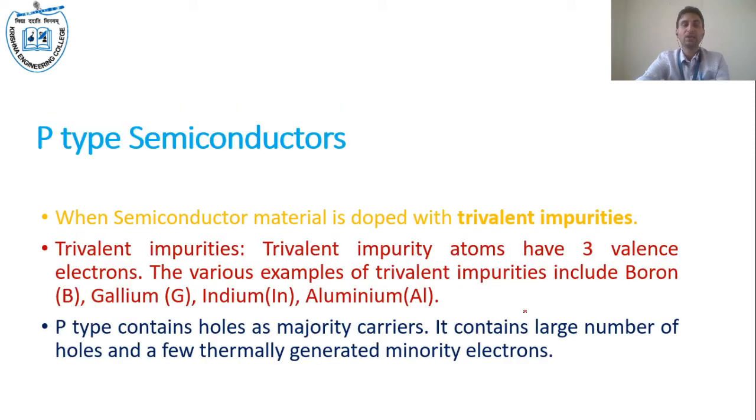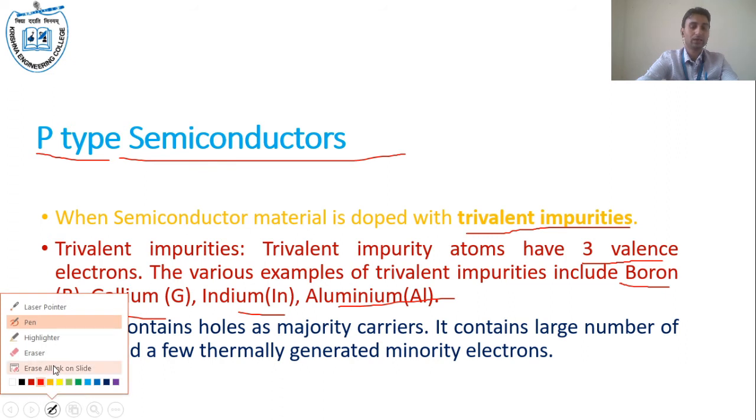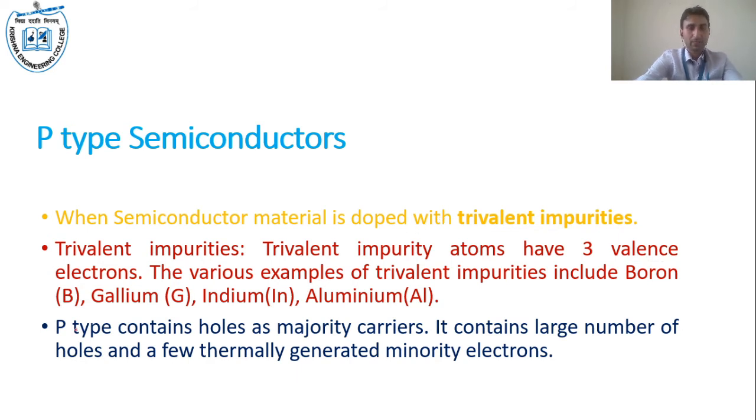Similarly, p-type semiconductor is made with trivalent impurities. Trivalent impurity has 3 electrons in its outermost orbit. We add it as an impurity, for example boron, gallium, indium, aluminum, etc. These are all impurities which are added to create p-type semiconductor. In p-type, one electron is missing, which creates holes. Majority carriers are holes, and it also contains some thermally generated minority electrons.